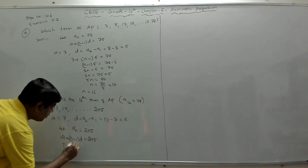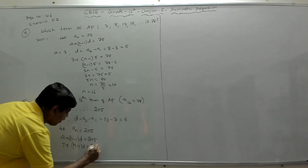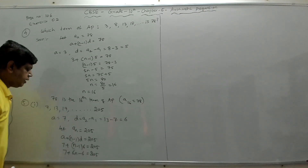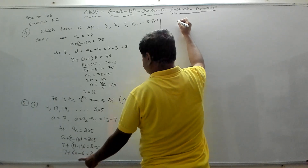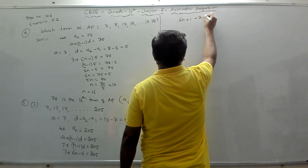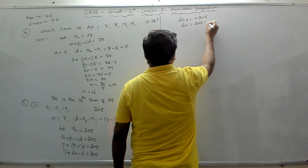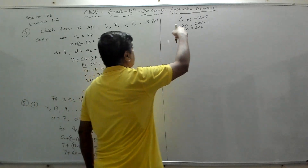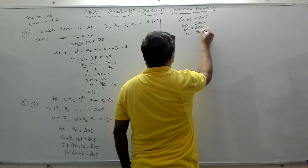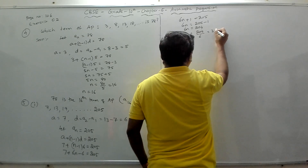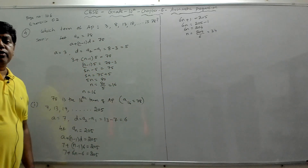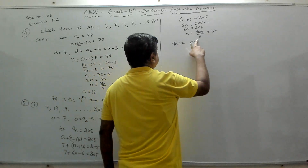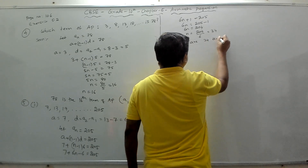Substituting a = 7 and d = 6: 7 + (n−1) × 6 = 205. Expanding: 6n − 6 + 7 = 205, so 6n + 1 = 205, giving 6n = 204, and n = 204 ÷ 6 = 34. There are 34 terms in this AP.